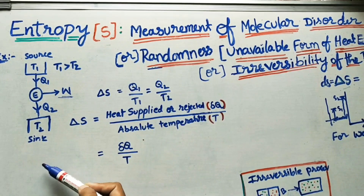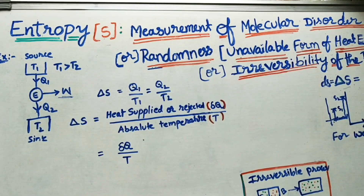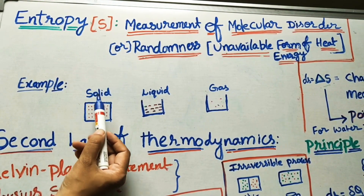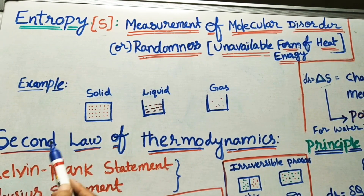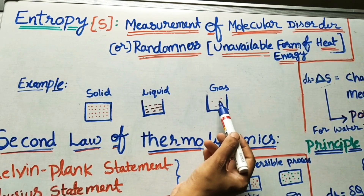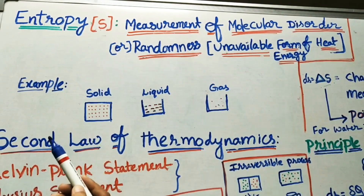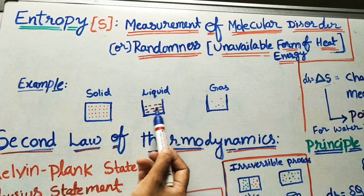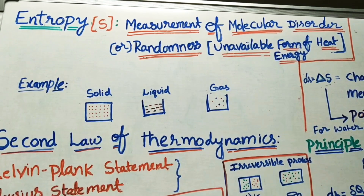Let me explain the first definition — measurement of molecular disorder or randomness — with an example. Consider solid, liquid, and gas. In a solid, atoms are arranged in a regular manner. In a liquid, they take the shape of the container. In a gas, atoms are arranged in an irregular manner. Wherever irregularity or disorder is greater, entropy is more.